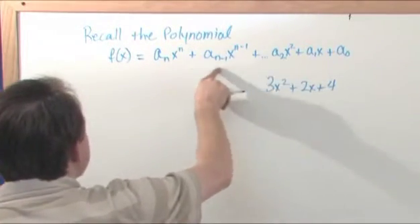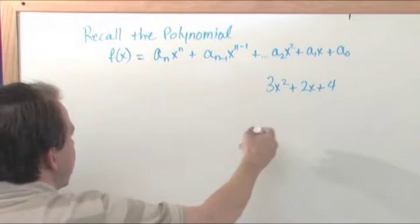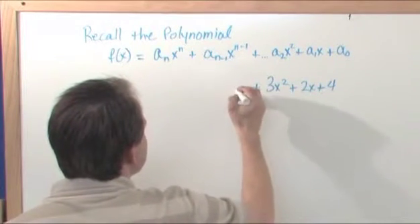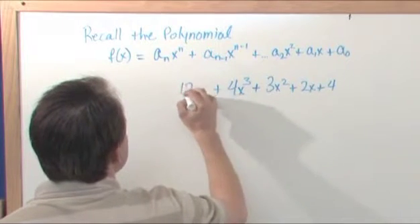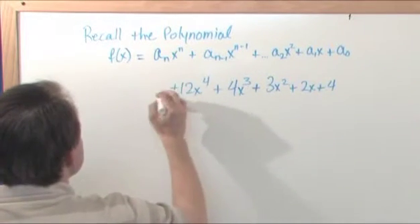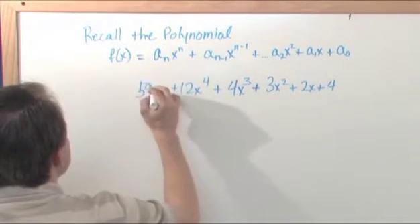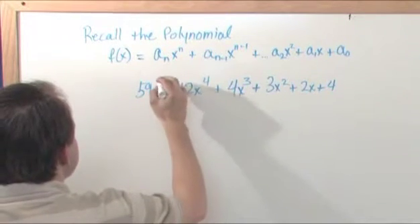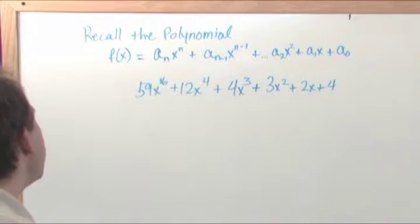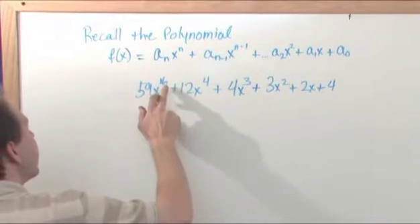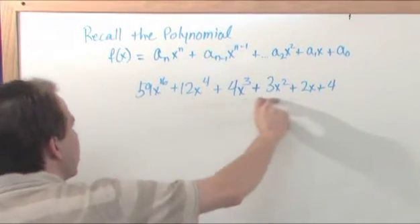All this means is that you can make an incredibly long, infinitely complicated expression. You could have plus four x to the third plus 12 x to the fourth plus 59 x to the sixteenth. I mean you can go as high a power of x as you can, and in each case the highest power of x is going to be the degree of this entire polynomial.